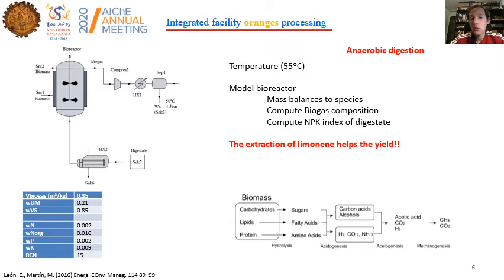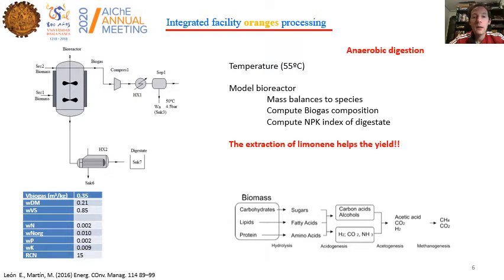The waste generated in each stage is digested. We use experimental data related to the composition of that waste. A particular feature is that having already removed the limonene improves the digestion yield, since limonene hinders digestion. This reactor operates at 55 degrees C and is modeled based on mass and energy balances to compute the biogas yield and the NPK index of the digestate. The digestion process consists of four stages: hydrolysis, acidogenesis, acetogenesis, and methanogenesis.